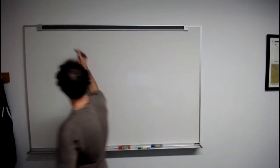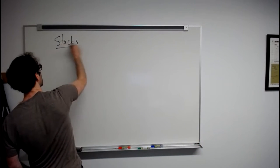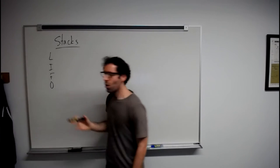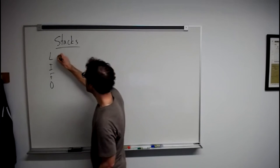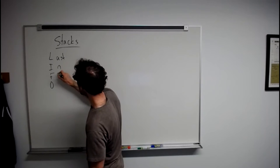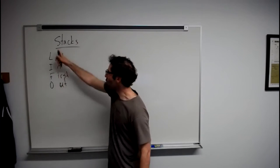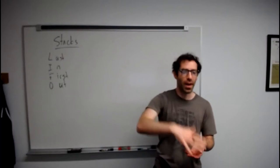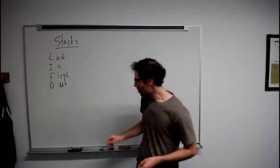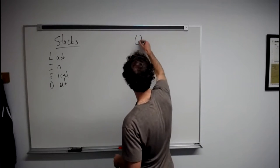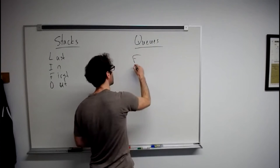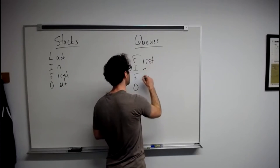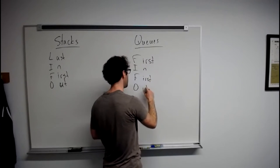So what are stacks and queues? Stacks are what is called a last in first out or LIFO structure, meaning that the last value that is added to the structure is the first to be removed. And in contrast, queues are a FIFO structure standing for first in first out.